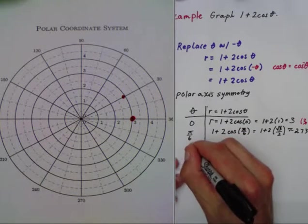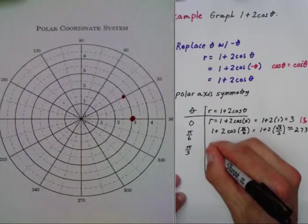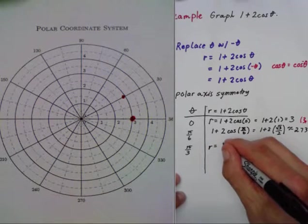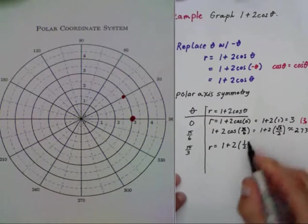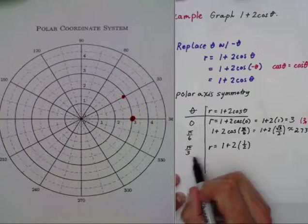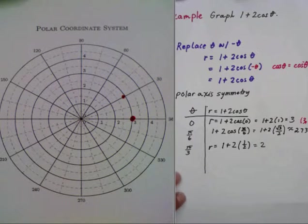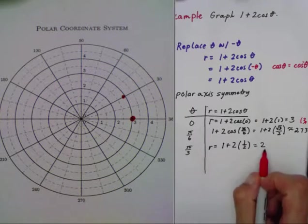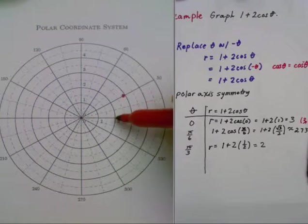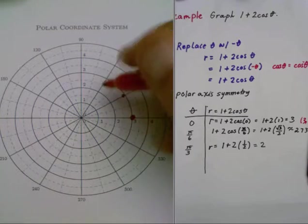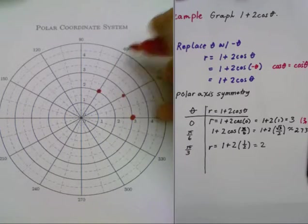Then I can try pi over three. Same substitution: r equals one plus two times one half. The cosine of pi over three is one half, so this gives us two. I go out one, two, and pi over three is 60 degrees. Two at 60 degrees.